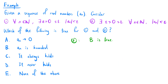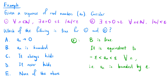For the second statement, the answer is b — an is bounded. Because we know that epsilon is a given number such that an lies between negative epsilon and epsilon for all n, which means that an is bounded by epsilon.